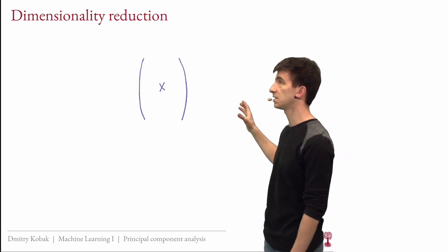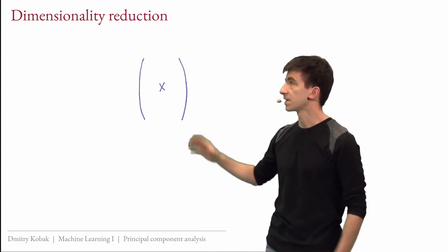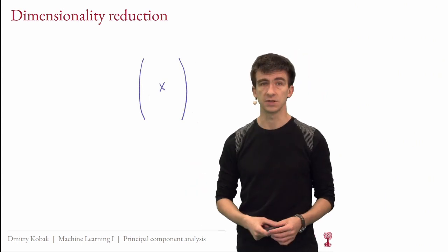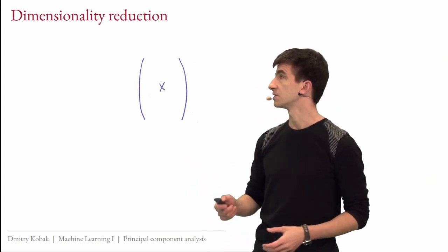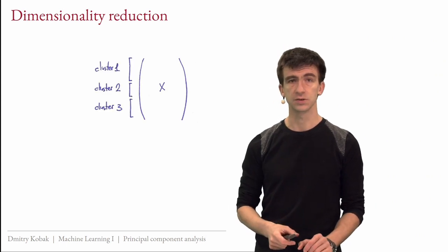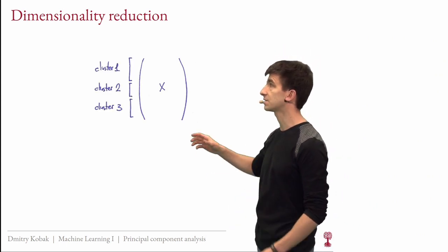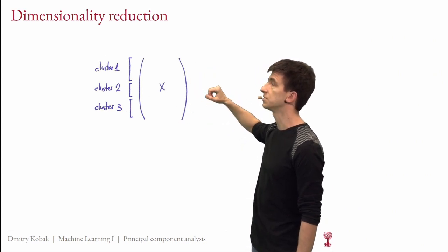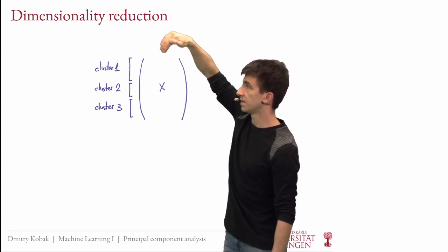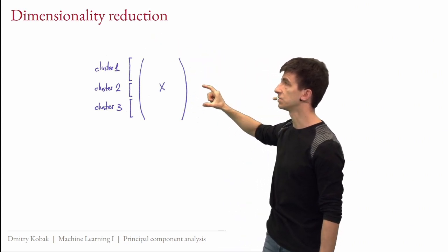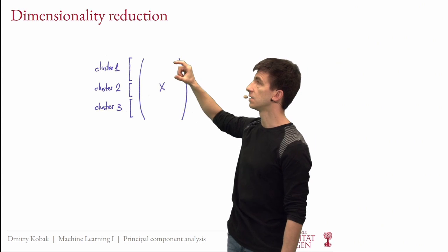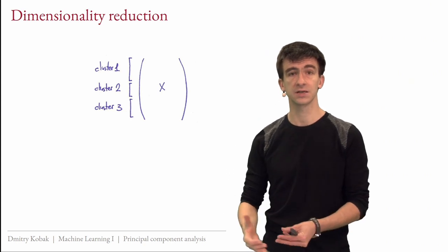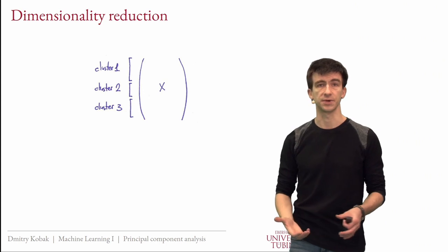Then we started to talk about unsupervised learning, where we don't have any y, so we are not predicting anything. We just have some data — the matrix x — and we try to learn some structure that's present in the data. This is not a prediction problem anymore; this is an exploration problem. Last week we talked about clustering, where we want to split the rows of x — corresponding to samples — into several groups, such as cluster one, cluster two, cluster three.